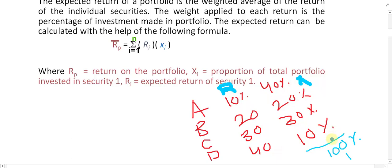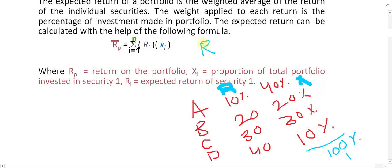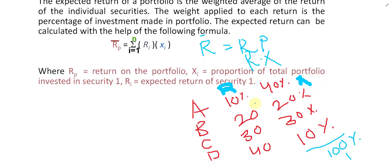If you recall, in the case of a single security, R̄ was equal to R into P, where P was probability. But in the portfolio case, instead of probability we have X, the proportion of investment — how much percentage is invested in each security. Simply multiply R by X for each security and sum them to get the expected return of the portfolio. In the next video, watch the example of how to solve this.